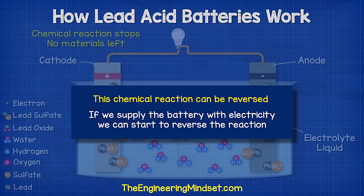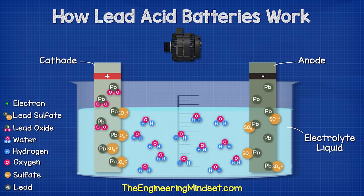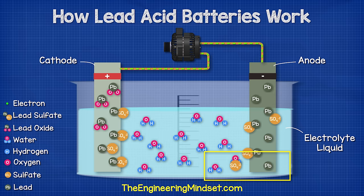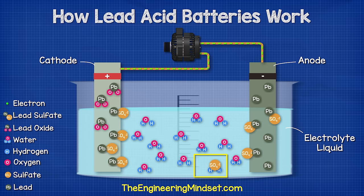Luckily this chemical reaction can be reversed. If we supply the battery with electricity from the alternator we can start to reverse the reaction. The electrons enter the negative terminal and rejoin with the lead sulfate, releasing the sulfate into the electrolyte to leave just lead on the negative plate. The sulfate ions then enter the electrolyte and combine with the hydrogen ions.